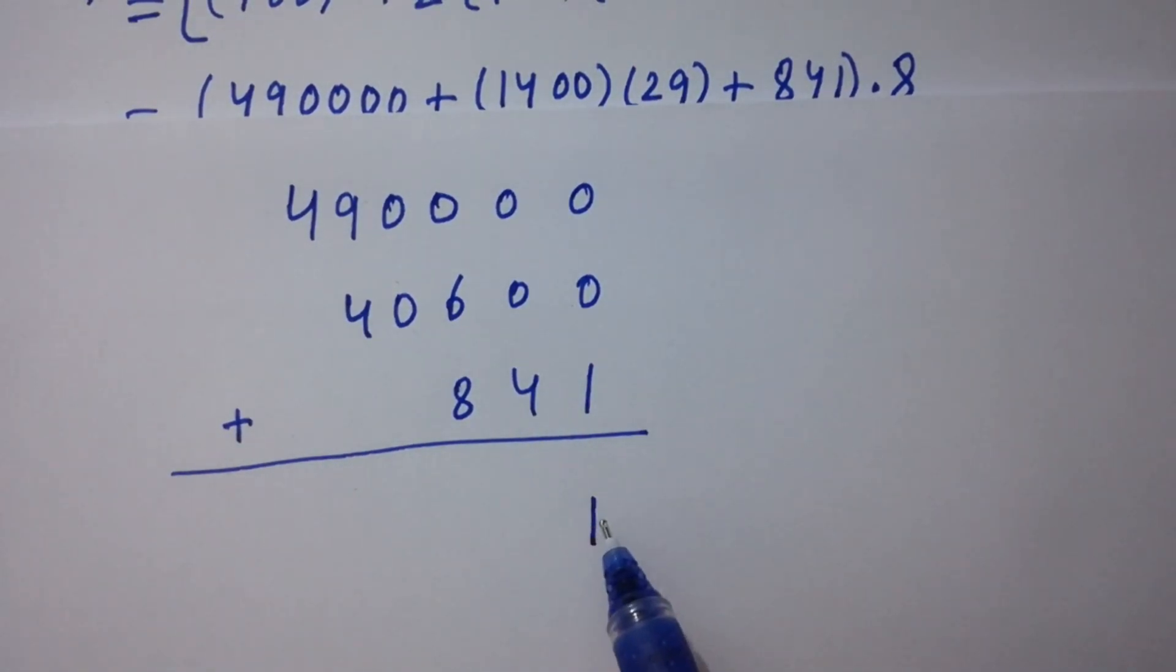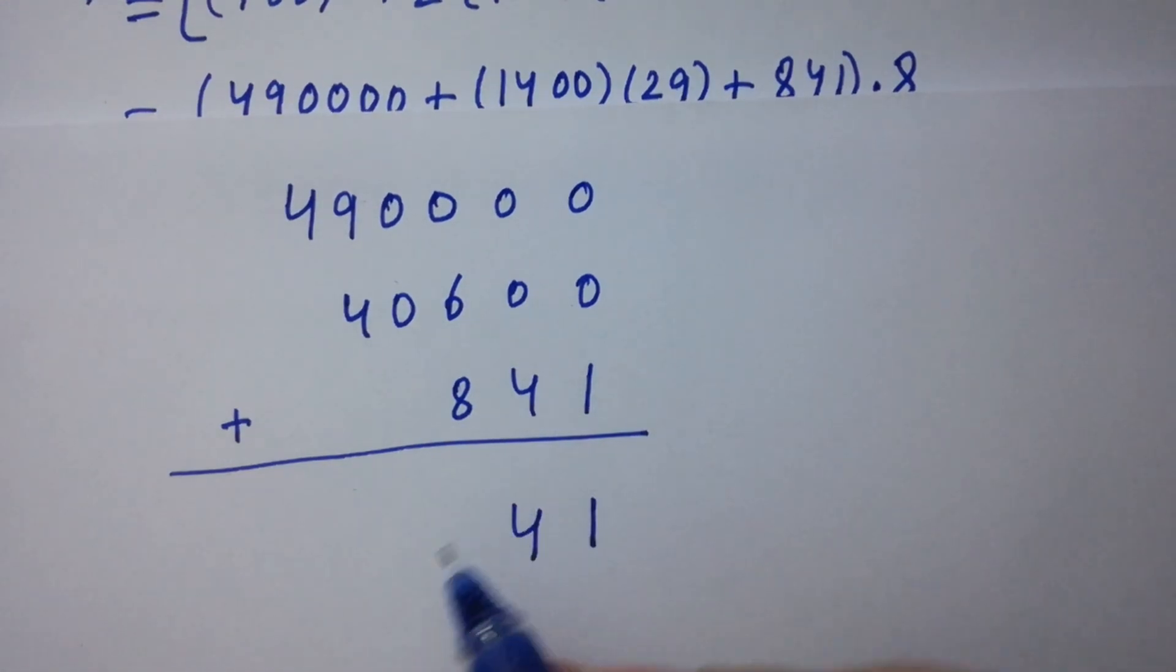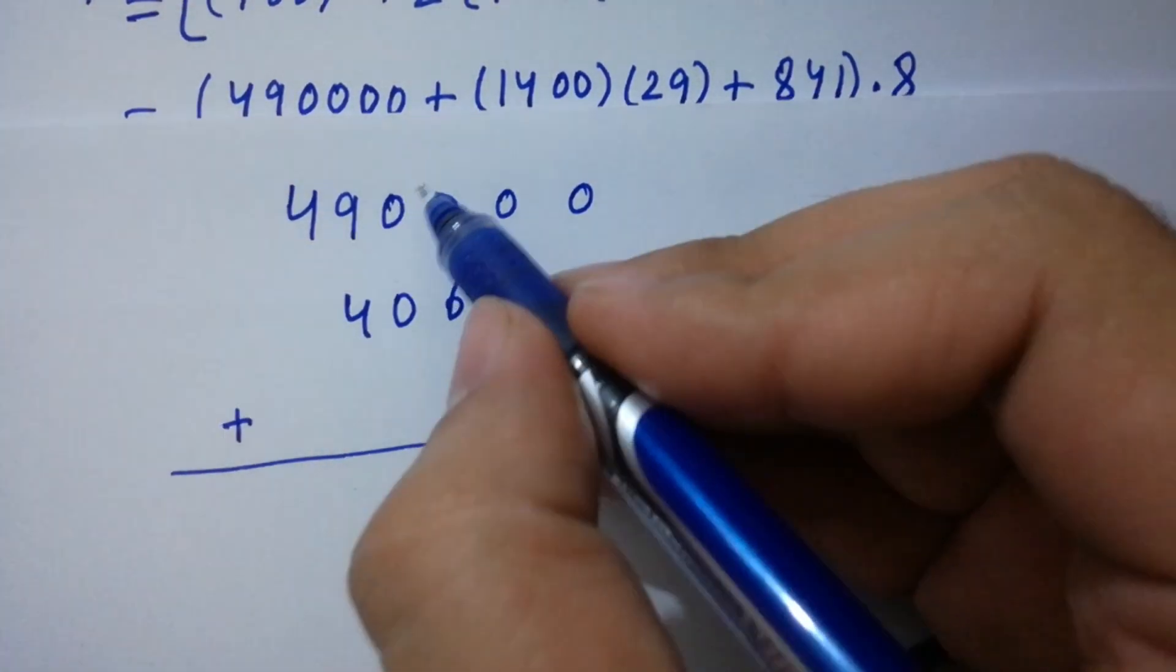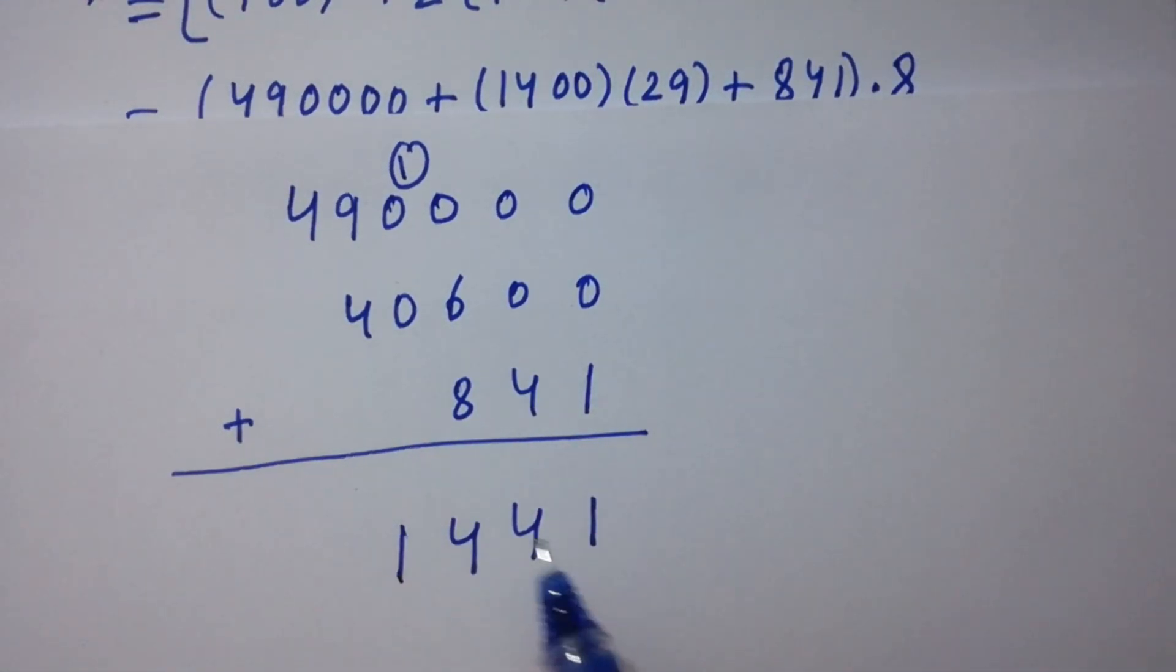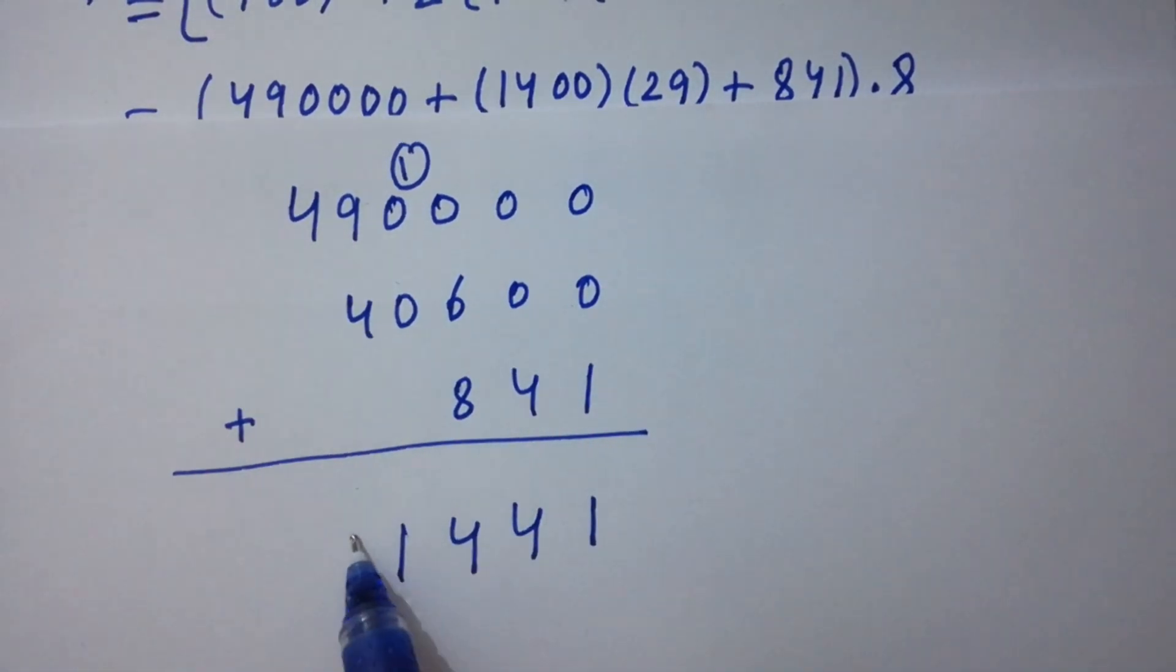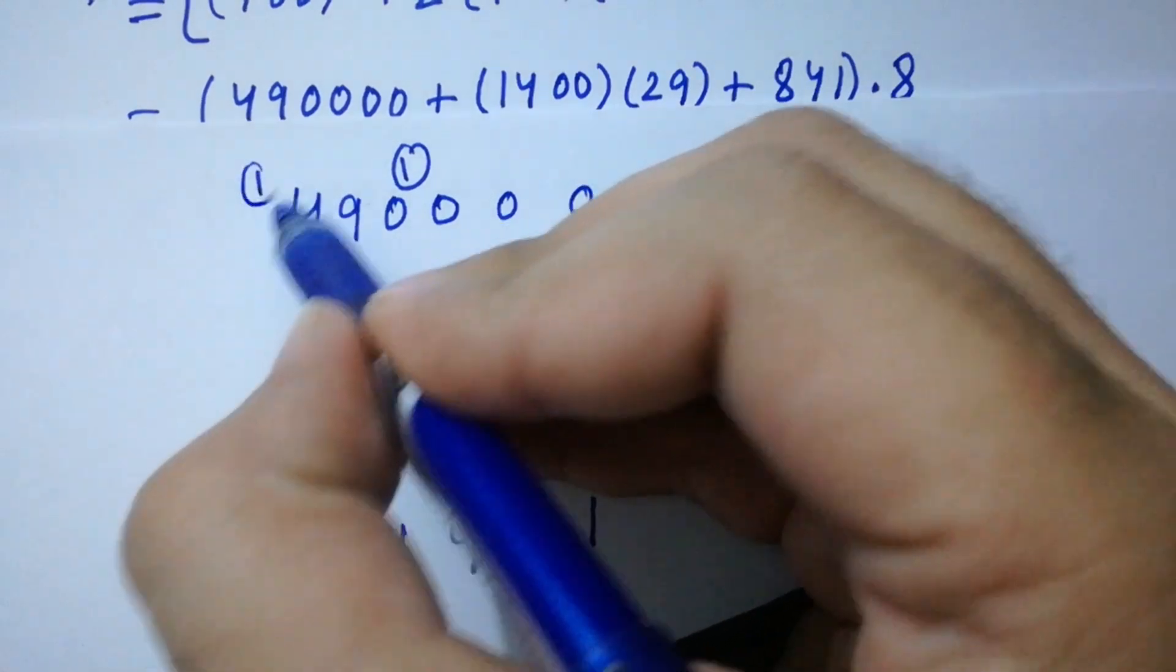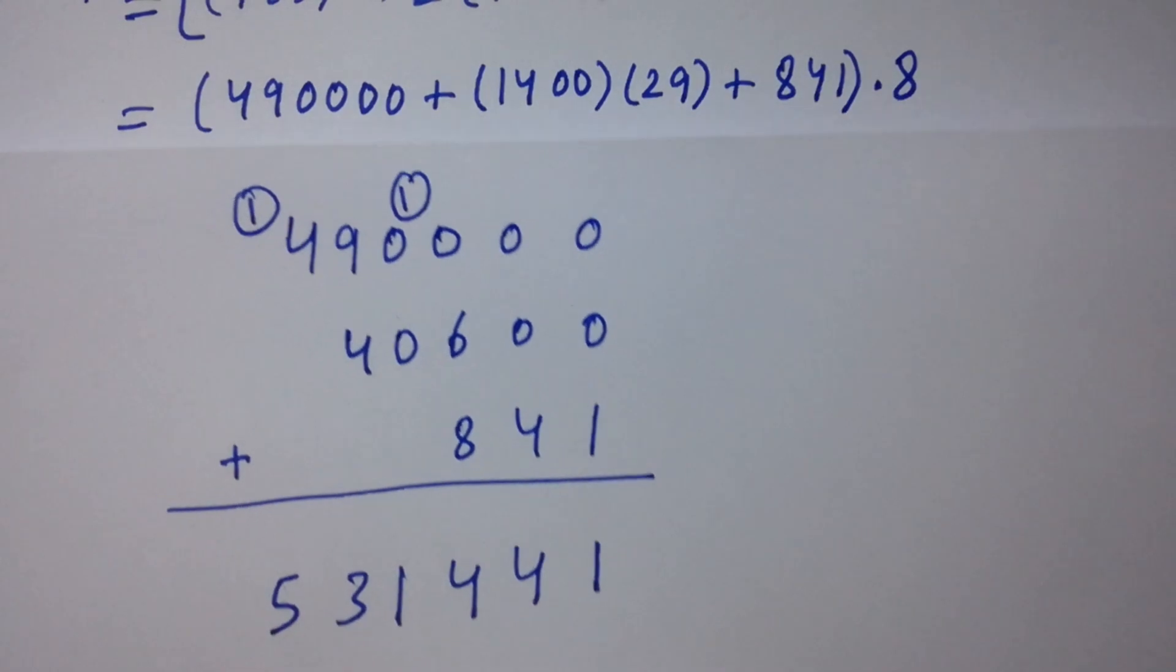0 plus 6 plus 8 is 14, 4 here 1 carry. Next, 1 plus 0 plus 0 is 1. Next, 9 plus 4 is 13, 3 here 1 carry. Next, 4 plus 1 is 5. We get 530841.